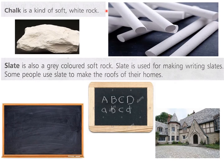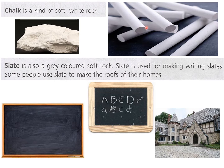The other kind of soft rock is chalk. Chalk is a kind of soft white rock. This is the chalk which is found in nature, and then we make it in this shape in factories.